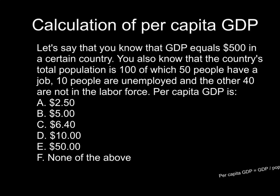10 people are unemployed, the other 40 are not interested in working or not able to work, and we're being asked to see what per capita GDP is. Take a look at all the choices — A, B, C, D, E, and F. You can pause the video and see if you can figure out the answer before I give the explanation.